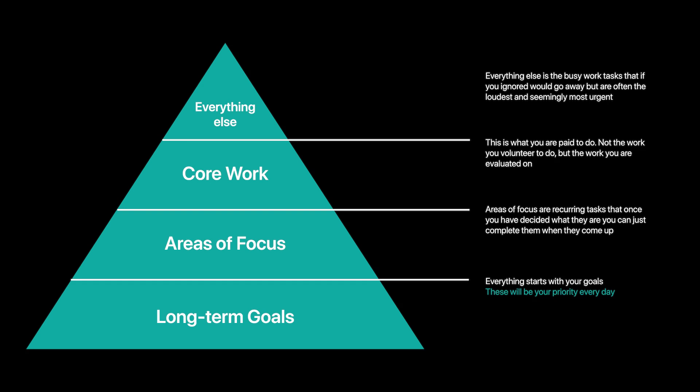On top of that is your areas of focus — the eight areas we all share that are important to us: things like family relationships, personal finances, health and fitness, career or business, lifestyle, life's purpose, personal development. Then on top of that we have our core work — the work you are employed to do. For example, if you're employed as a salesperson your core work is selling. You get paid for selling, not for admin or writing reports. You've got to understand the difference between what you're actually paid to do and what you're in effect volunteering to do.